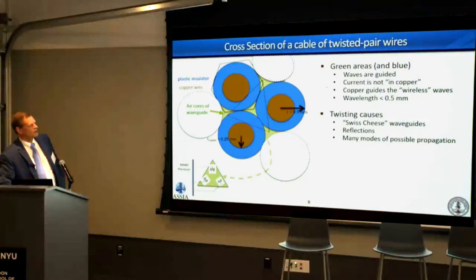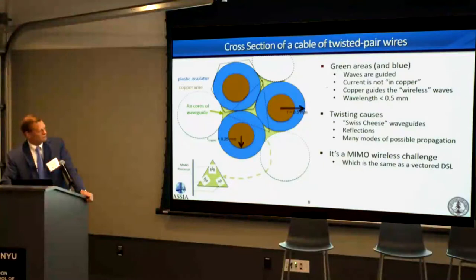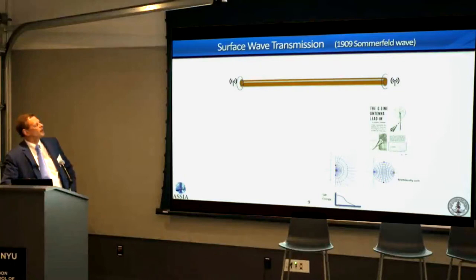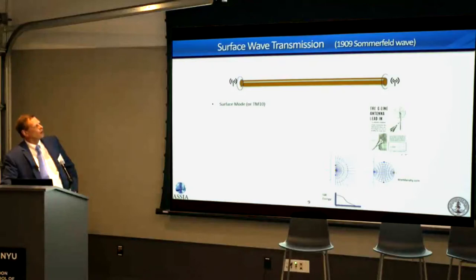It's a MIMO wireless channel, but we've seen that before. These messy systems can be accurately resolved by vector signal processing, which has already been proven and used. The simplest example — though we're not suggesting using it directly — is the surface wave on a single wire, which dates to Sommerfeld in 1909. It was initially hailed, then criticized, then hailed again. The idea is that the wire helps hold the wave close to it, making it slightly better than wireless alone.